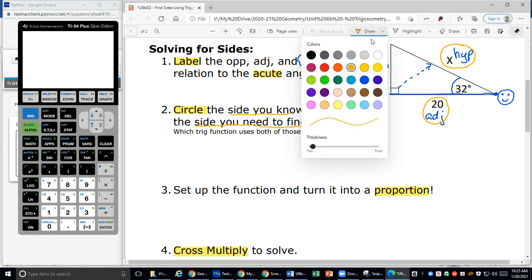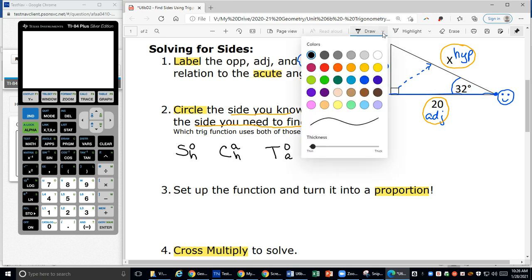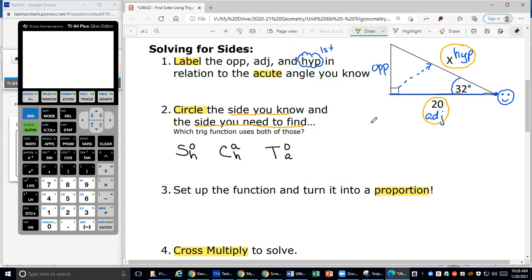Which trig function uses both of those? We remember the acronym SO-CA-TOA. If I look at the two that I circled, I circled the adjacent side. I'll put little check marks by the A's for adjacent. And we circled the hypotenuse, so I'm going to put check marks by the H's for hypotenuse. Which trig function uses both the adjacent and the hypotenuse? Not the sine, not the tangent, but the cosine. So I know I'm going to be using cosine.